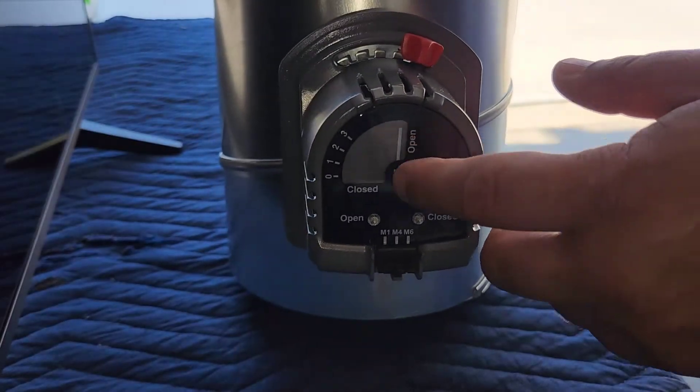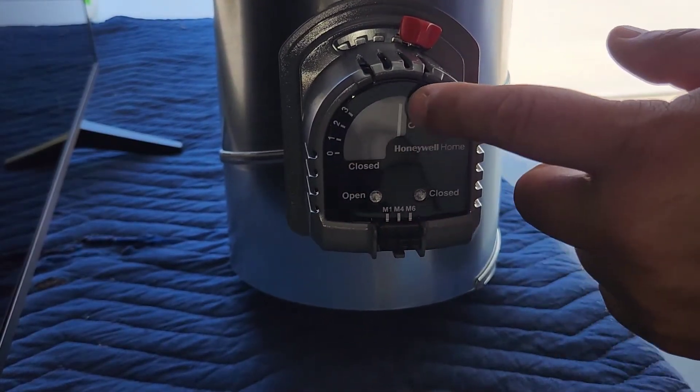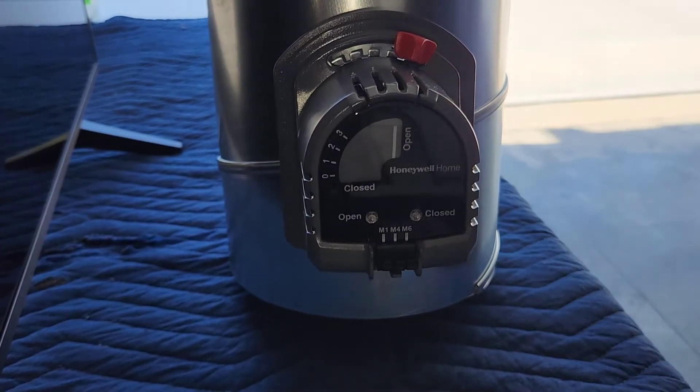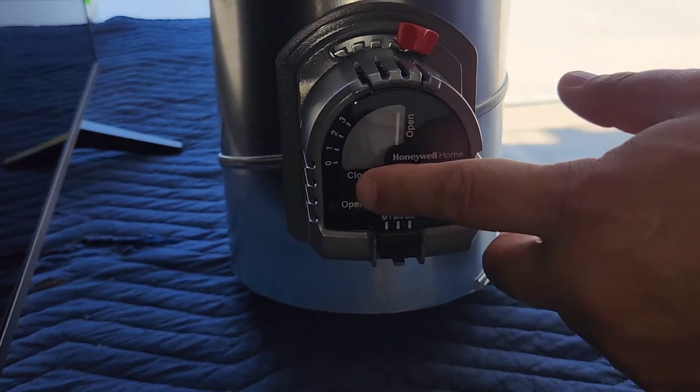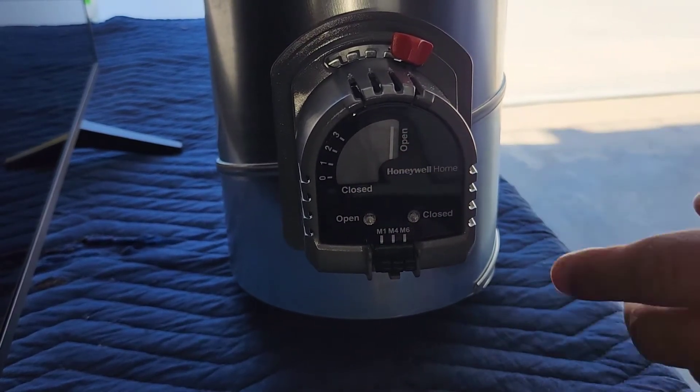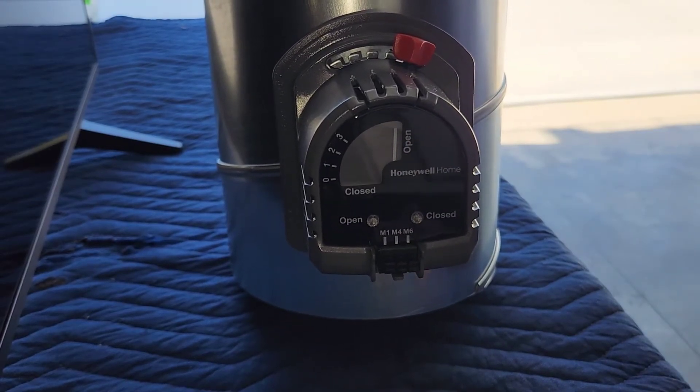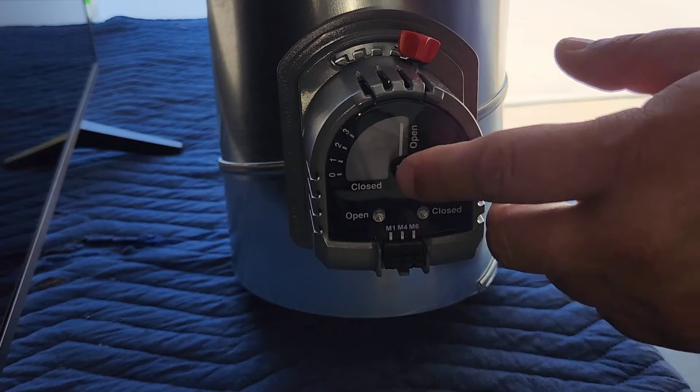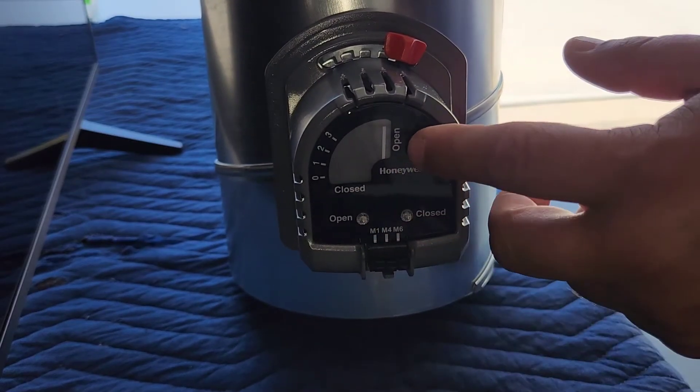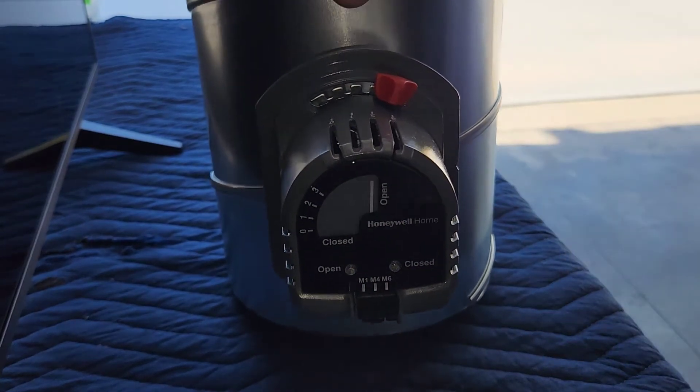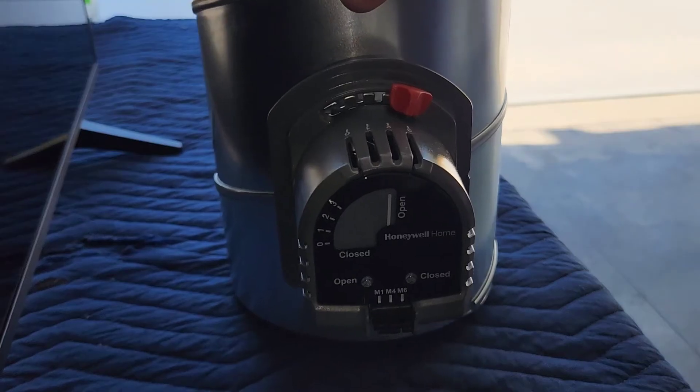One last note, we can't do anything about this, but the open and closed window here is going to be backwards. So a lot of times just to not confuse somebody, I'll just mark over that with a black marker or something that way nobody gets confused by it. Or you can get a label maker and you can put open instead of close and close instead of open. Just one of those things you want to confuse somebody that comes in behind you.